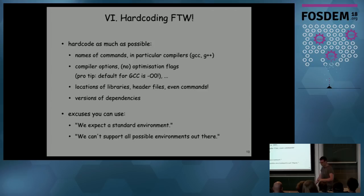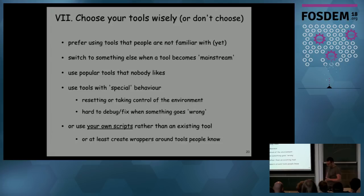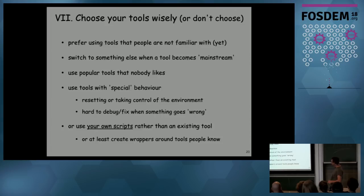Choose your tools wisely: try to use build tools and configuration tools that people don't know, so they have to learn before they can install your software. If it becomes too mainstream, switch to something else. Or use tools that are very popular but that nobody likes — force it on them. Try to use tools with special behavior, stuff that controls the environment, puts you in a box, makes it hard to put stuff in the box, and makes it hard when something goes wrong to figure out what's wrong. Even better: don't use any tools at all — just use your own scripts. Or create wrappers around things people know, but don't tell them.